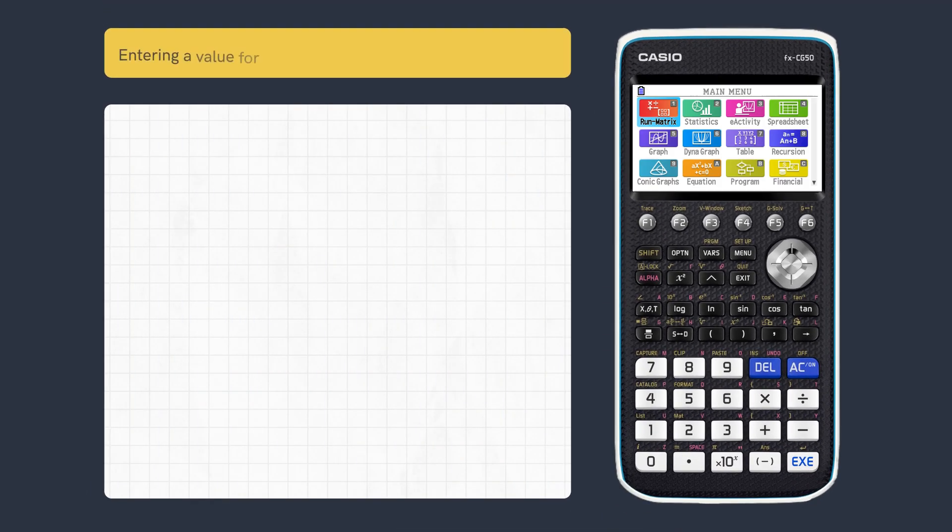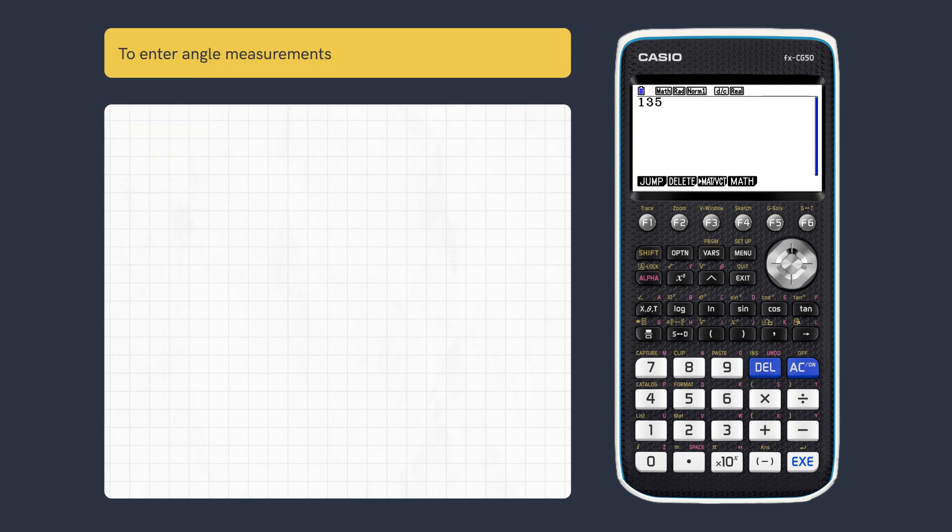This video looks at how to convert between radians and degrees. First let's enter this value in RunMatrix. We can now easily enter and convert angles if needed.